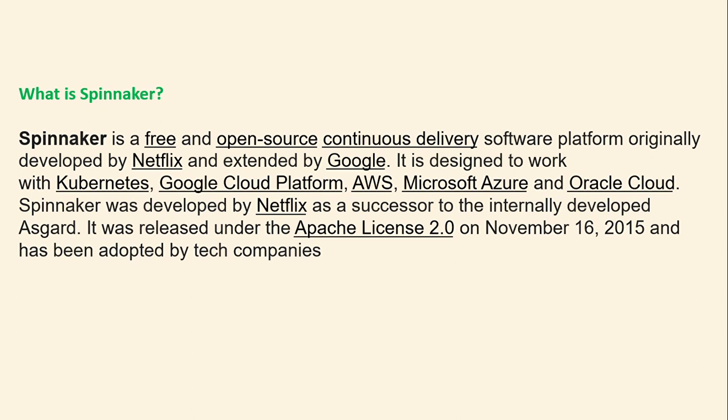Spinnaker is a free and open-source continuous delivery software platform originally developed by Netflix and extended by Google later on. It is designed to work with Kubernetes, Google Cloud Platform, AWS, Azure, Oracle Cloud, and others. Spinnaker was developed by Netflix as a successor to their internally developed tool Asgard. It was released under the Apache License 2.0 in November 2015 and has been adopted by many tech companies since then.